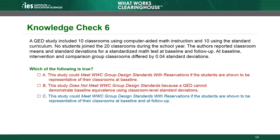Moving to Steps 5–7, to satisfy WWC standards for effects on clusters, a cluster QED must establish representativeness and baseline equivalence of clusters. The baseline difference of 0.04 standard deviations establishes baseline equivalence of clusters, as long as the authors can demonstrate that the sample is representative of the clusters at baseline. Therefore, the study can meet WWC group design standards with reservations, as long as the authors can demonstrate that the sample is representative of the clusters at both baseline and follow-up.